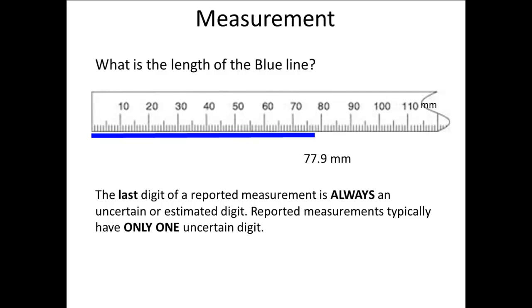Remember that the first measurement had only one digit, and that digit was an estimated or uncertain digit. The second measurement had two digits, and the second one was uncertain, while the first one was certain. The third measurement had three digits, and the third one was uncertain, while the first two were certain.